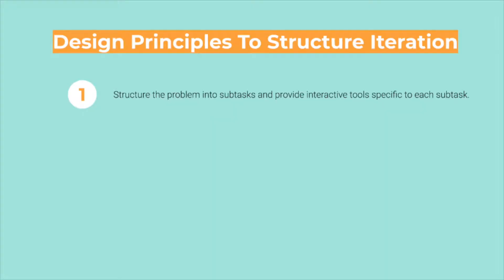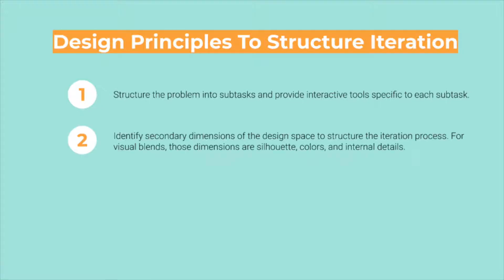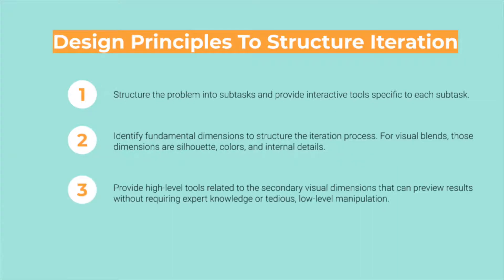We propose the following design principles to structure iteration. First, structure the problem into subtasks and provide interactive tools specific to each subtask. Second, identify secondary dimensions to structure the iteration process — for visual blends, those dimensions are silhouette, colors, and internal details. Third, provide high-level tools related to the secondary visual dimensions that can preview results without requiring expert knowledge or tedious low-level manipulation.